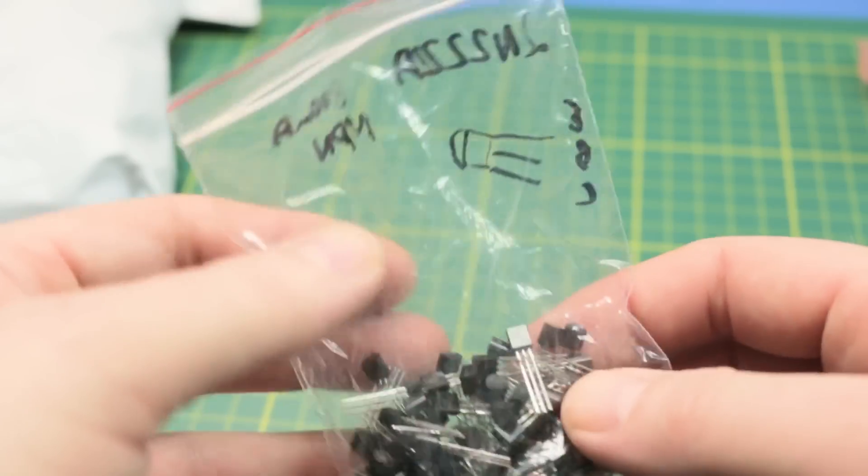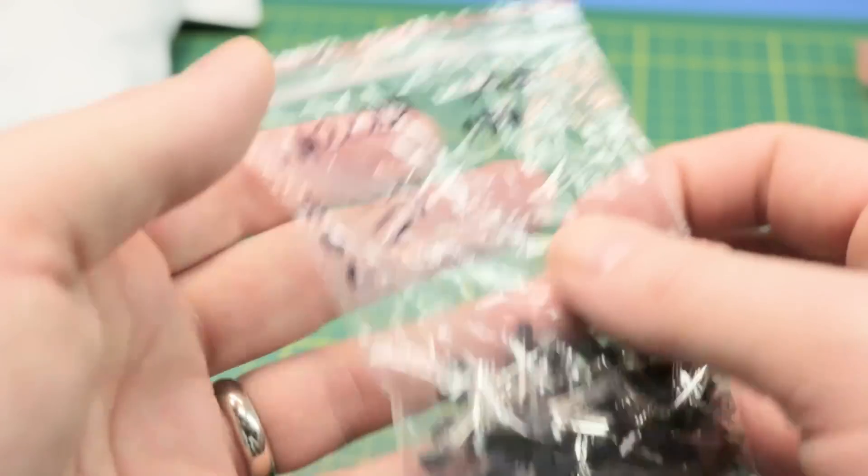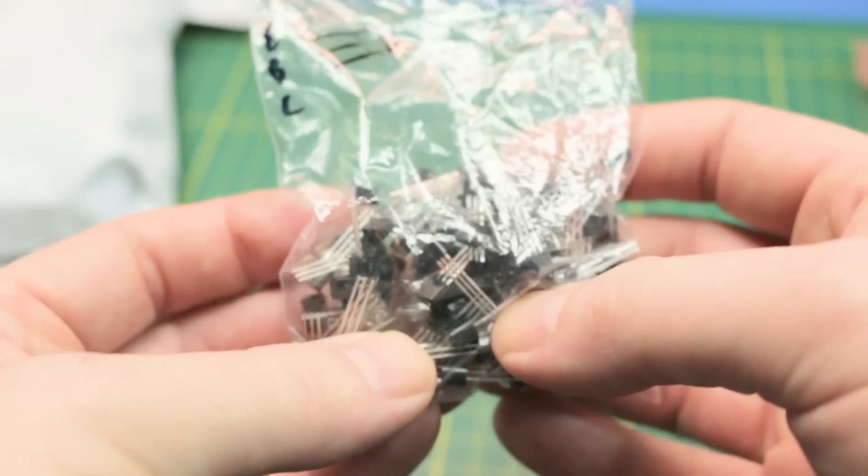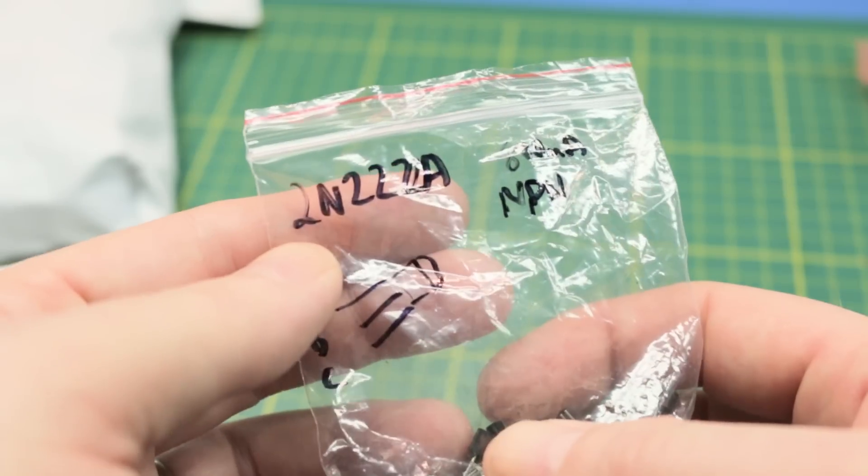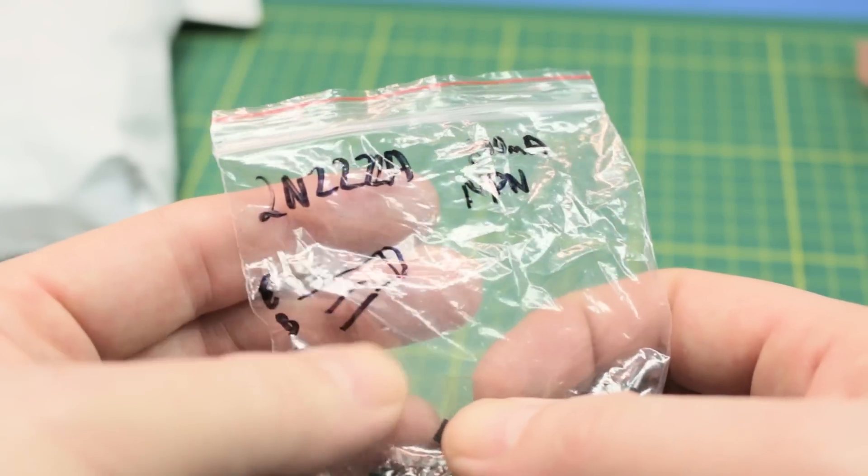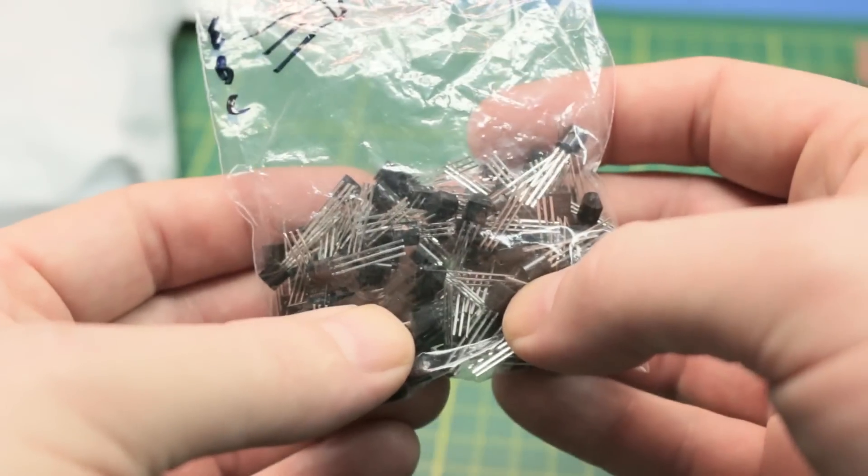In this bag, I already took the liberty of labeling them. These are NPN transistors, the 2N2222A model. A pretty common transistor, good for a lot of projects.